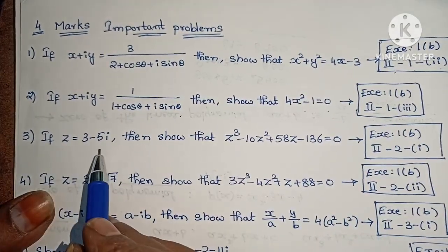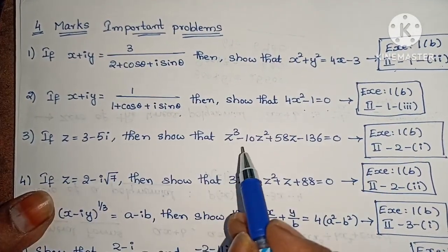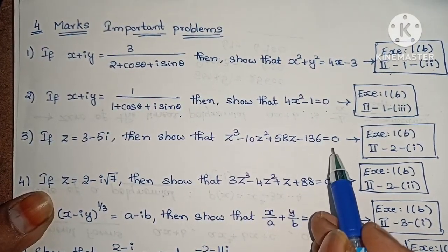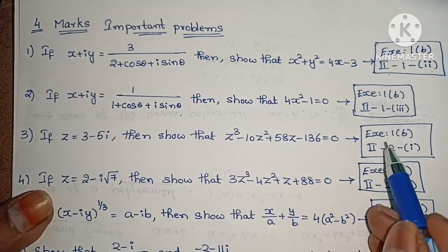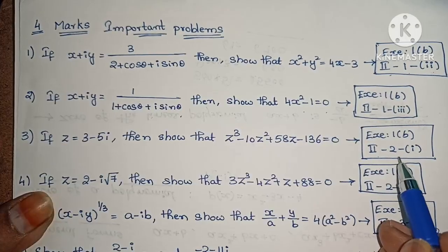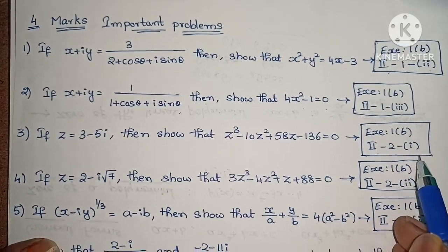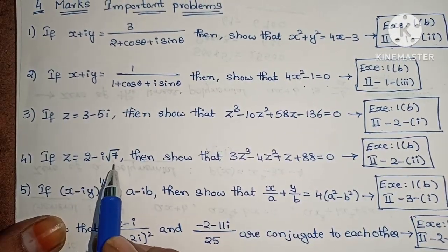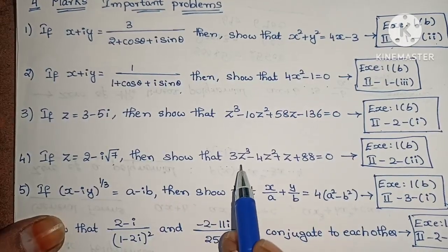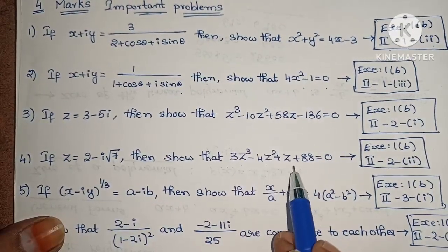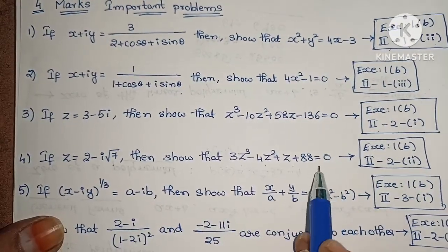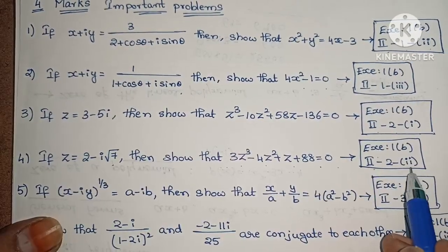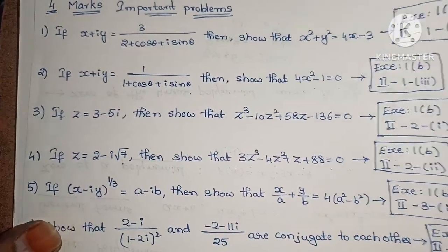Next, if z equals 3 minus 5i, then show that z³ minus 10z² plus 58z minus 136 equals 0. Exercise 1 below, second roman, second, first one. Next, if z equals 2 minus i root 7, then show that 3z³ minus 4z² plus z plus 88 equals 0. Exercise 1 below, second roman, second, second one.